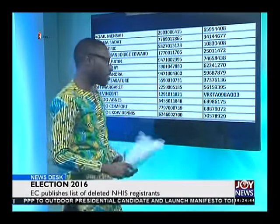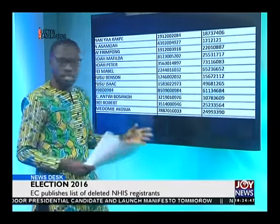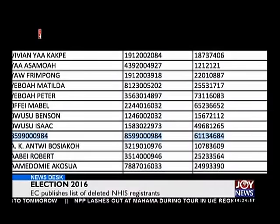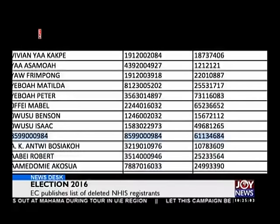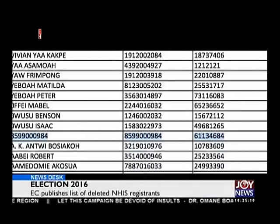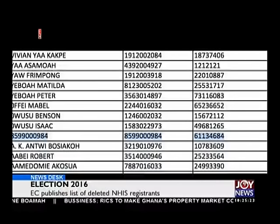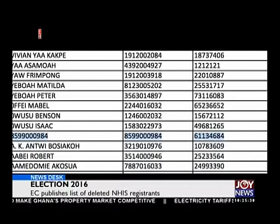Moving to the fourth instance: the name of one individual here happens to be a number — 8599000984. That's the name of the individual, and the individual's voter ID number is the same number. The NHIS card number is also an eight-digit number: 611-346-8-4. Quite a number of conflicting things on that very website. For many who want to know if they've been removed, how do you know your name if no one is called 8599000984?